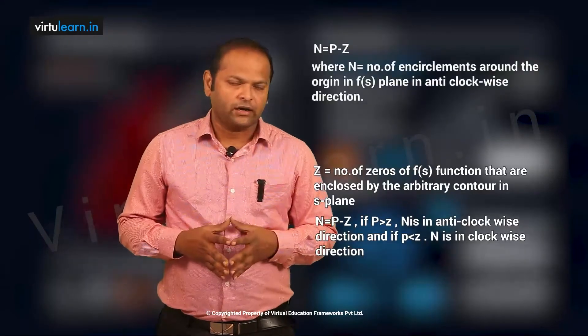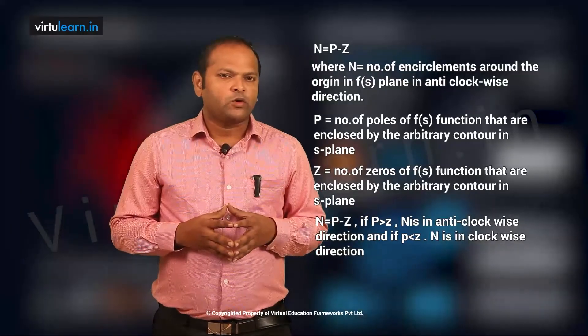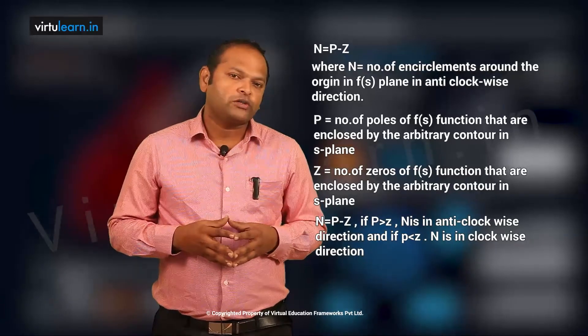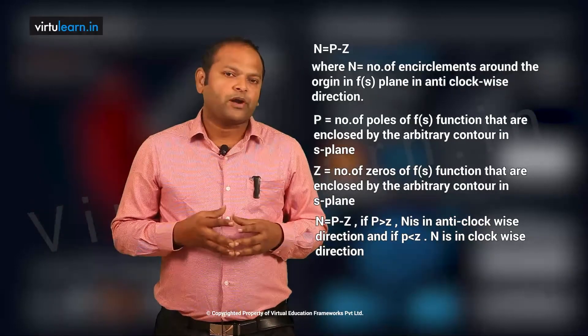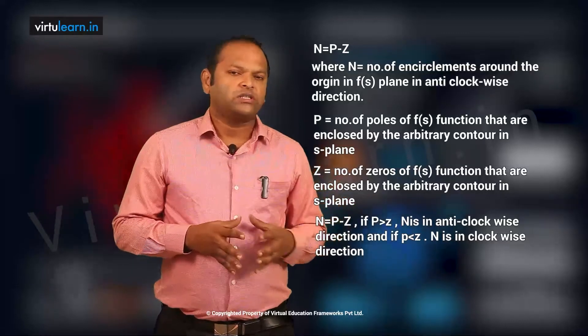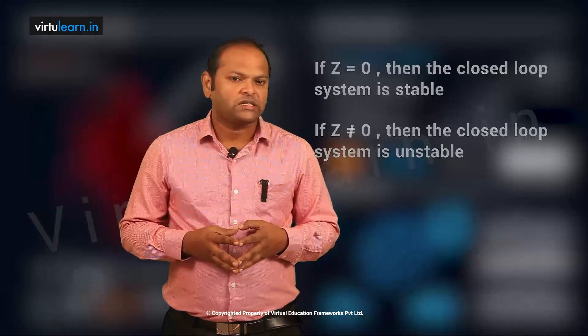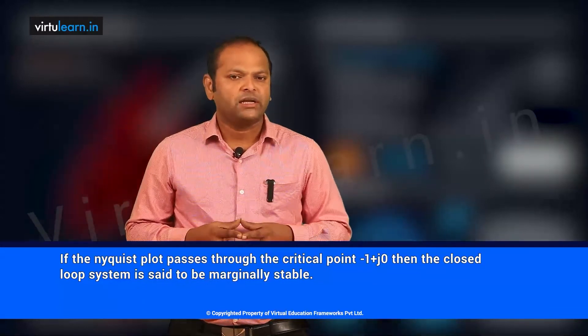For this stability criterion we use the formula N = P - Z, or we can write it as Z = P - N. Z is the number of closed loop poles lying in the right half of the S plane. P is the number of open loop poles lying in the right half of the S plane. N is the number of encirclements around the critical point minus 1 plus j0, in the anti-clockwise direction. If there are encirclements in the clockwise direction, we take N as positive. If Z = 0, the system is stable. If Z ≠ 0, the closed loop system is unstable. If the Nyquist plot passes through minus 1 plus j0, the system is marginally stable.